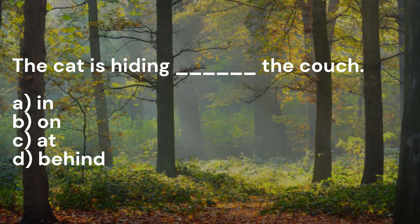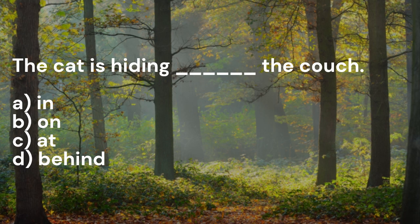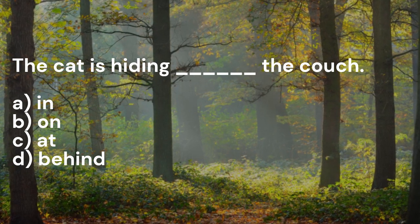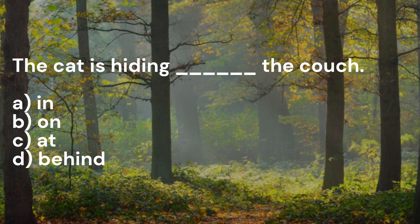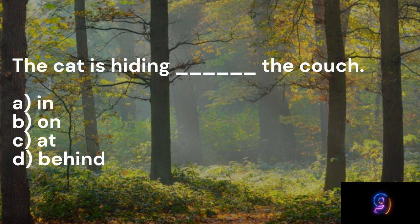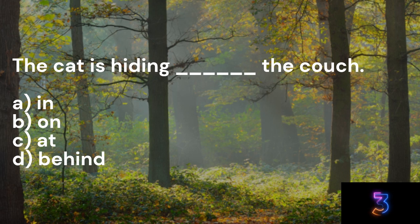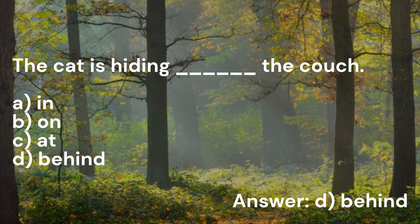The cat is hiding underscore the couch. A: In, B: On, C: At, D: Behind. Answer D: Behind.